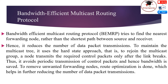To maintain the multicast tree, BEMRP uses the hard state approach — a node transmits the required control packet only after the link breaks, to rejoin the multicast group. This avoids periodic transmission of control packets, saving bandwidth. To remove unwanted forwarding nodes, root optimization is done, which further reduces the number of data packet transmissions.